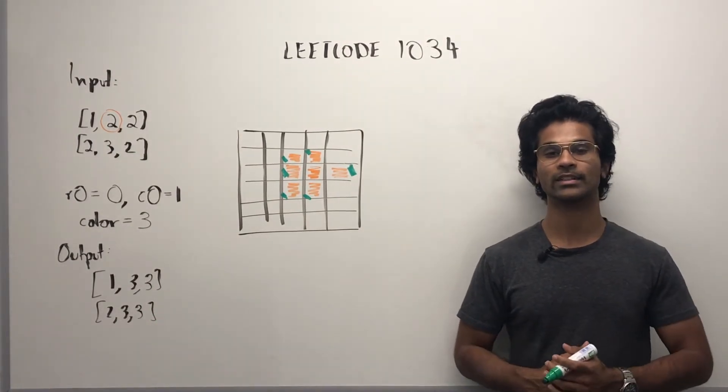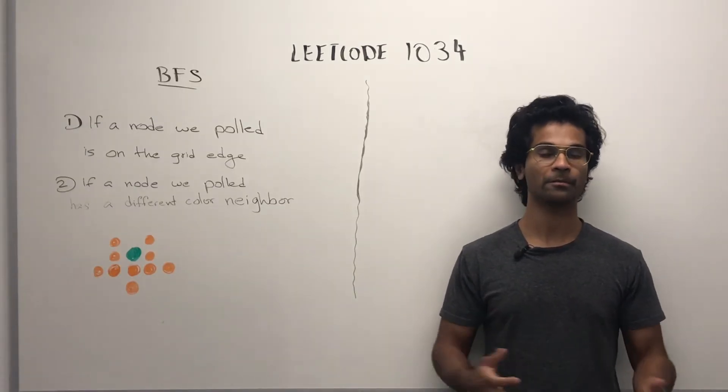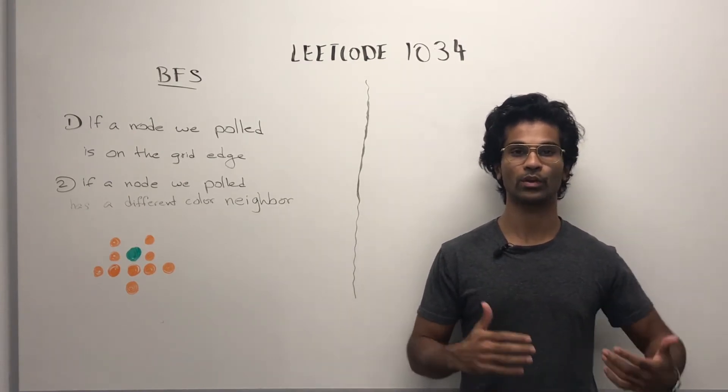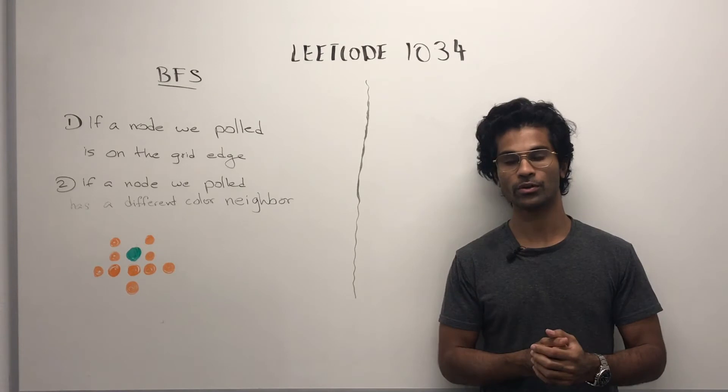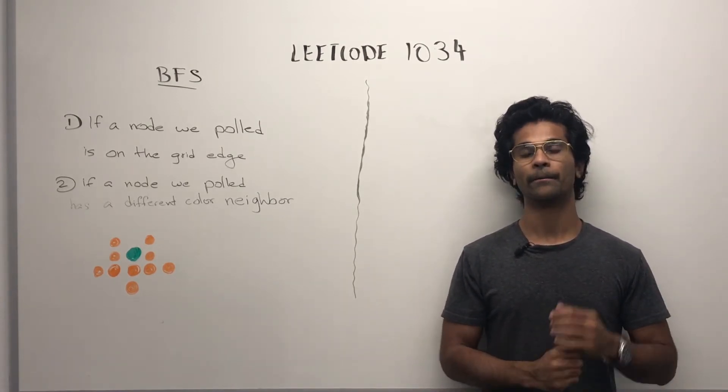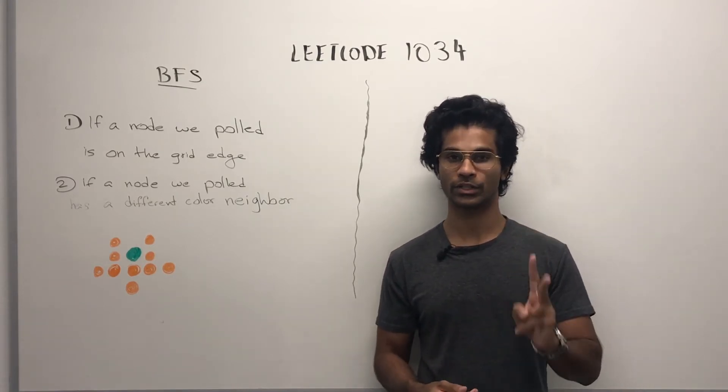Now, let's look at the diagrams for BFS and DFS. The BFS approach is going to be pretty simple. It's just a standard BFS iteration where we start from the origin node and traverse everything in the connected component, but we're going to color every node we pull on two conditions.